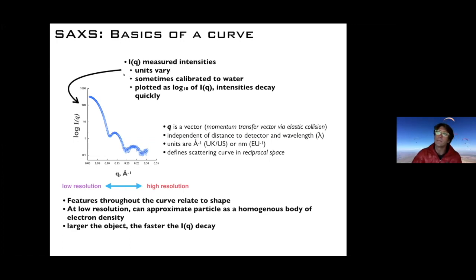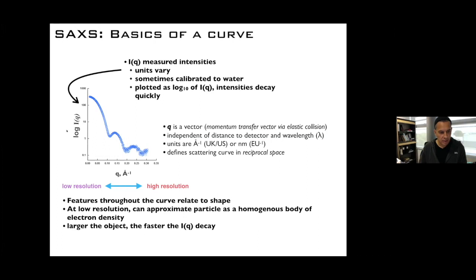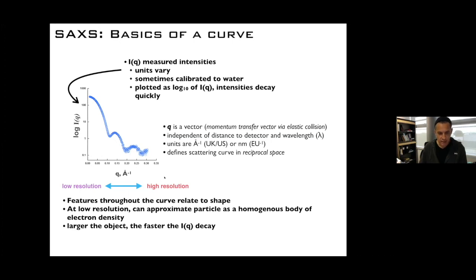This is a SAXS curve. A lot of times you see it on a log-log scale on the y-axis, and on the x-axis it's a regular linear scale. Near zero we call this low resolution, and as you go to higher q this would be higher resolution. Q is what we call a momentum transfer vector.